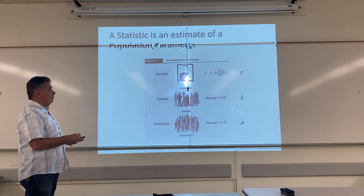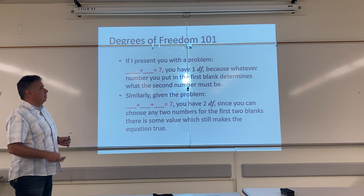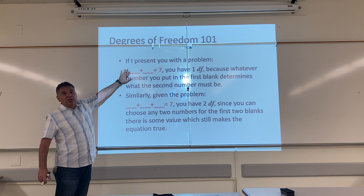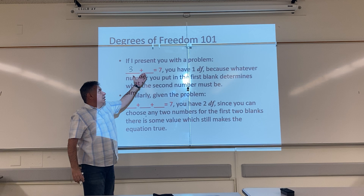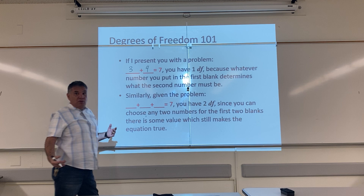What was the second definition? It's the number of values that are free to vary given one or more mathematical restrictions. Let's take a look at that. Let's pretend I'm showing you this problem: something plus something equals 7. I tell you to pick any number in the world — let's say 3. Can I pick any number now for the second blank? No. Now I am restricted. There's only one answer that can make this true — it can only be 4.